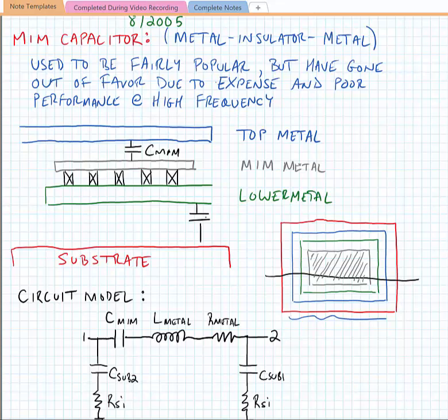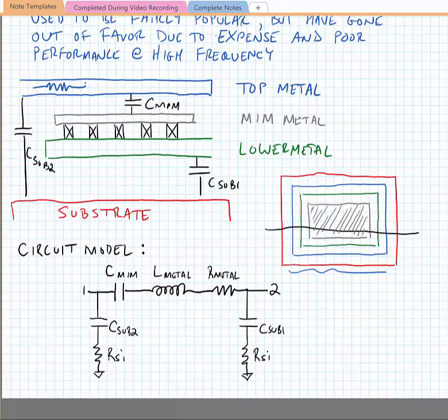Additionally the metallization has some finite resistance and inductance due to ohmic losses and currents flowing through the metal.